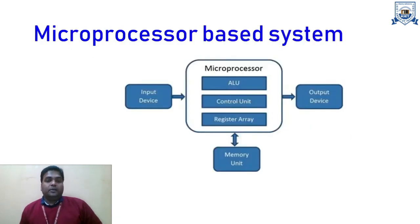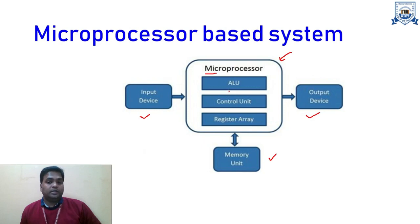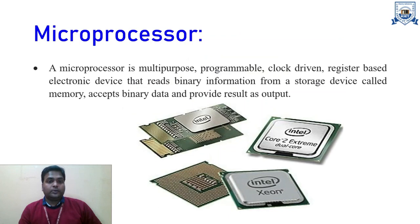In a microprocessor-based system, in place of the CPU we have the microprocessor, which contains an arithmetic and logic unit, control unit, and register array — all on a single IC chip that is very small in size, which is why it is known as a microprocessor. The system also has input devices, output devices, and a memory unit. These are basically the components of the microprocessor-based system.